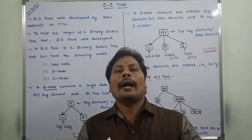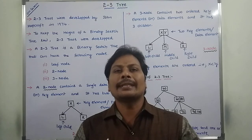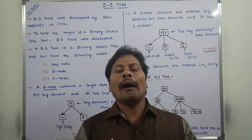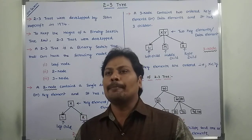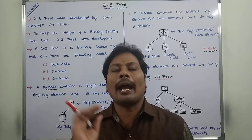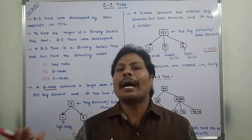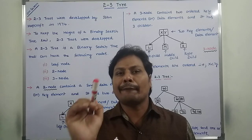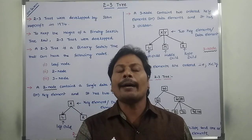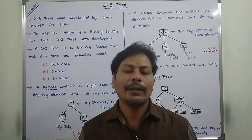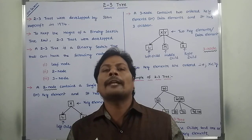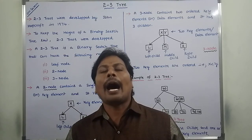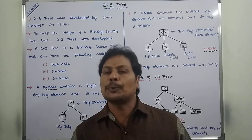Hi friends, today I am giving a lecture on 2-3 Tree in Data Structures and Design and Analysis of Algorithms. It is the Advanced Binary Search Tree. What is the reason behind developing the 2-3 Tree from Binary Search Tree? In a Binary Search Tree, whenever we are performing insertion operations, the height of the Binary Search Tree is increased. To keep the height as low as possible, we develop a height-balanced Binary Search Tree called the 2-3 Tree.